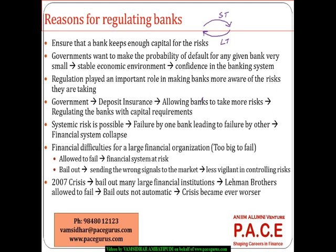This money keeps rotating. Whatever short-term deposit has come in, the bank lends it to someone. That person purchases something, and whoever sold it deposits that same money back with the bank. The bank then lends again. Overall, the total loans relative to deposits or capital the bank has is much, much more. So ensuring the bank keeps enough capital to meet the risks is the major objective of any regulation.